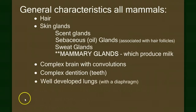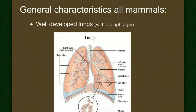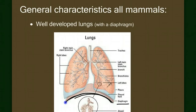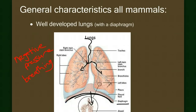The next characteristic is well-developed lungs with a diaphragm. The mammalian lung is well-developed with good gas exchange — not as efficient as birds with their extra air sacs, but still pretty efficient. There is a muscle underneath the lungs called the diaphragm that controls breathing. When this muscle contracts, it drops down, creating negative pressure which sucks air into the lungs — we call this negative pressure breathing. We can contrast this with the positive pressure breathing seen in amphibians.